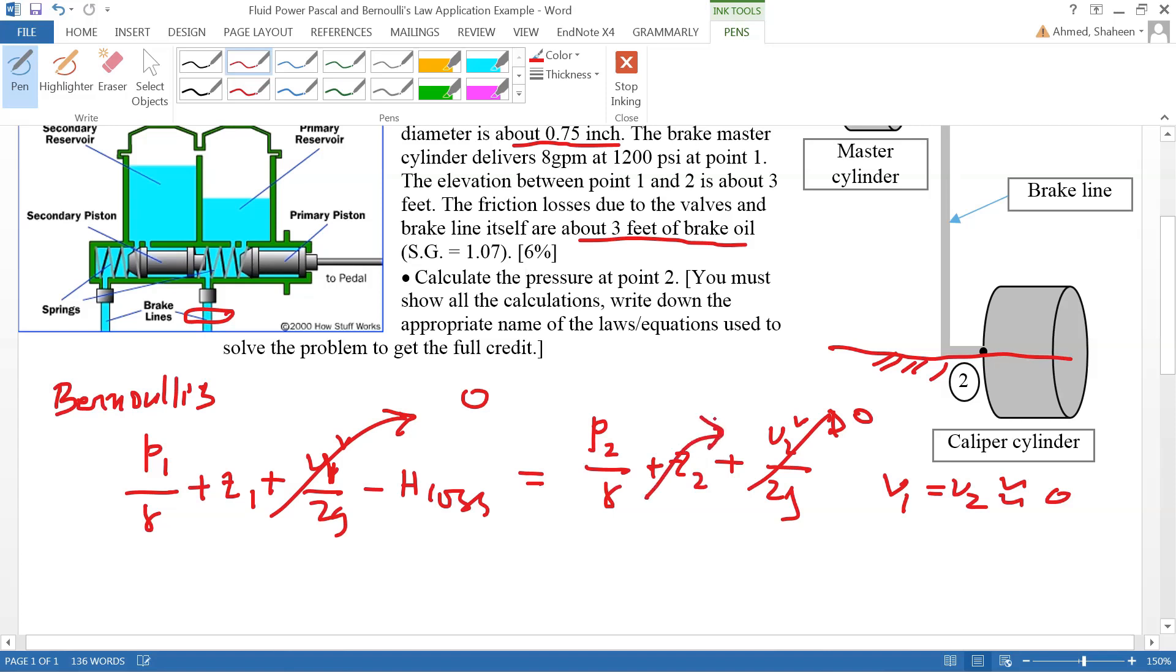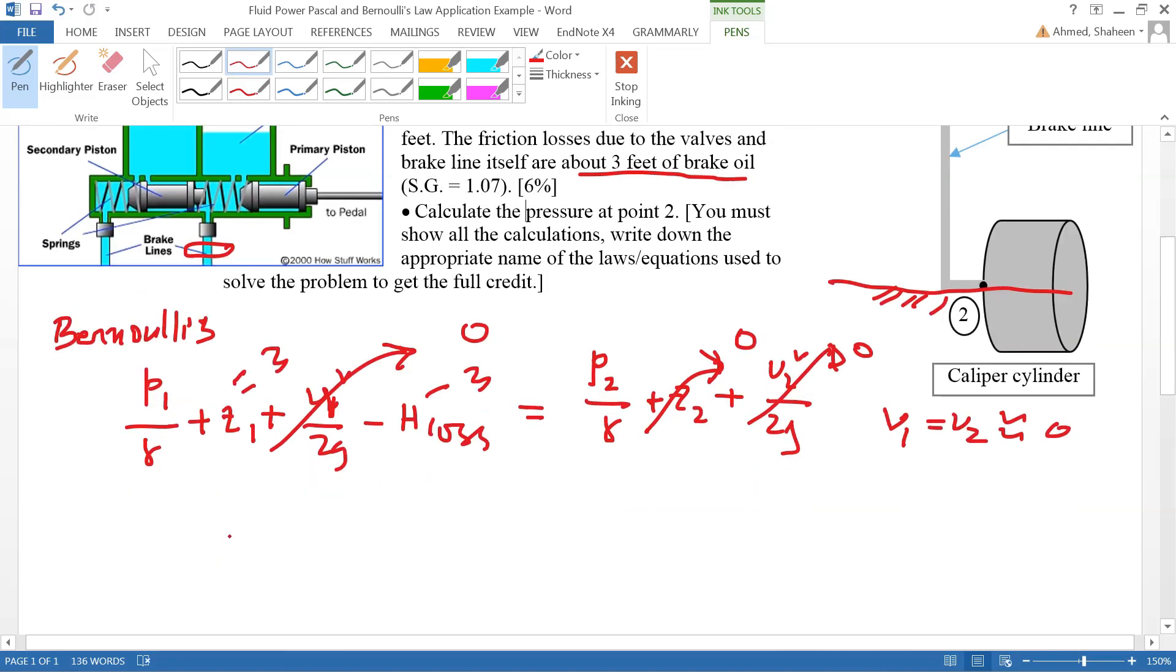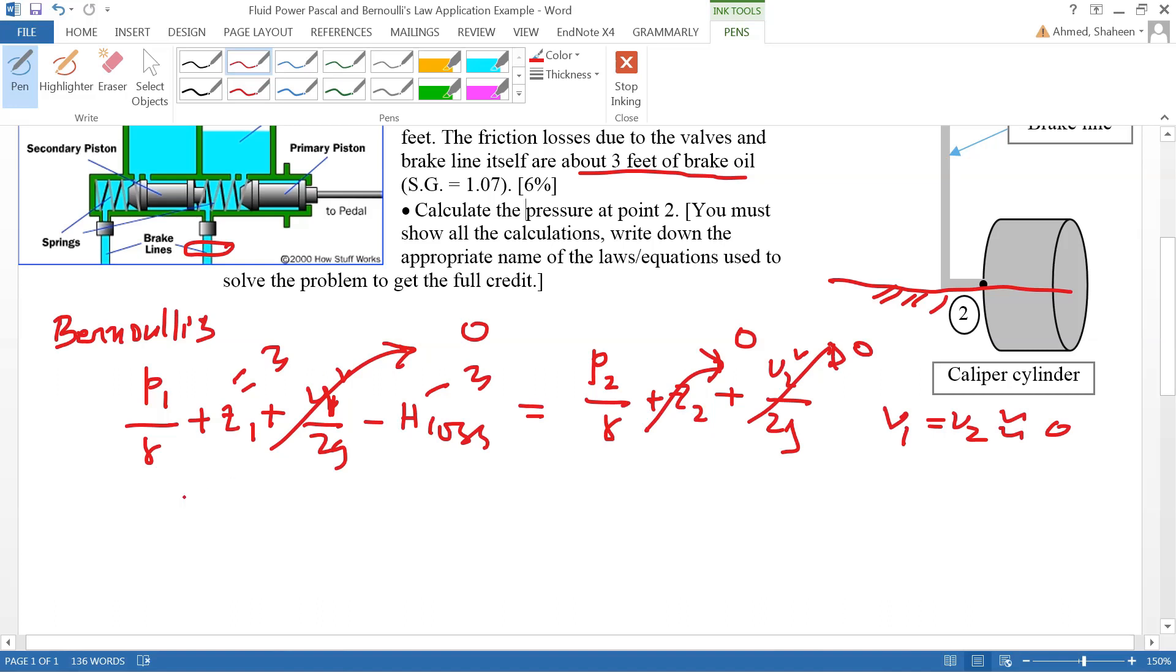Z1 will be three, and you've got three feet lost, so basically three minus three. The only thing left here is pressure equals pressure, so P1 equals P2. That's what this question is asking. P1 is given as 1200, so basically 1200 psi is the answer.